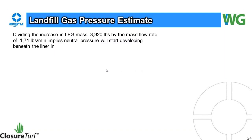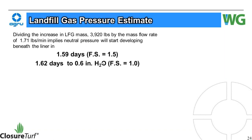Dividing the increase in LFG mass of 3,920 pounds by the mass flow rate of 1.71 pounds per minute: neutral pressure beneath the geomembrane begins at 1.59 days to a factor of safety of 1.5, and 1.62 days to 0.66 inches of water column at FS = 1.0. Just a few hours can separate a safe condition from an unstable one. That's top-deck conditions, so not as critical — it's more critical on side slopes.